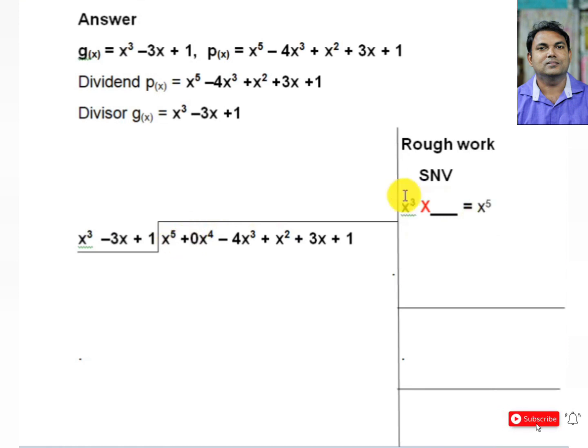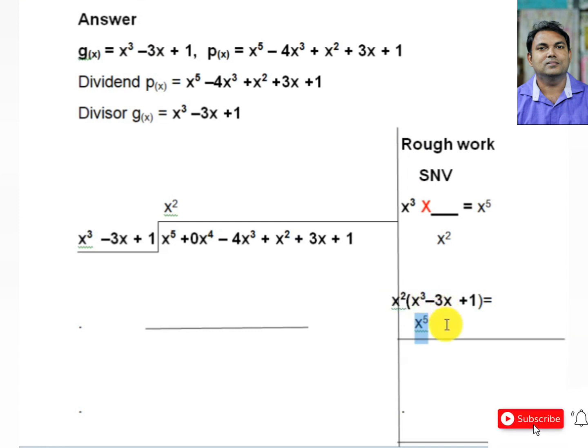x³ - 3x + 1 dividing x⁵ + 0x⁴ - 4x³ + x² + 3x + 1. x² multiplied by x³ gives x⁵. x² multiplied by -3x gives -3x³. x² multiplied by 1 gives x². So we get x⁵ - 3x³ + x².